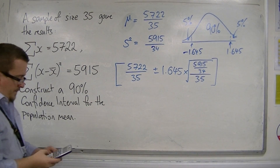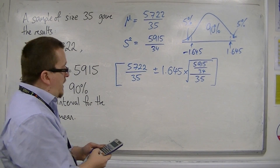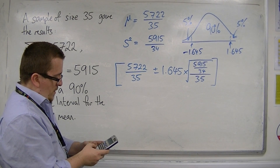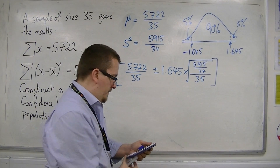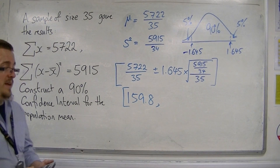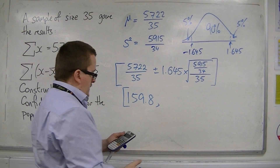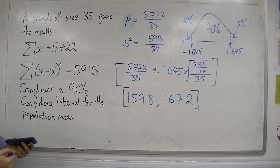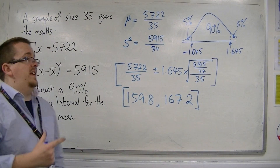Plugging that into the calculator: 5,722 over 35, minus 1.645 times the square root of 5,915 over 34, divided by 35 gives 159.8 as the lower confidence limit. And replacing it with a plus gives 167.2 as the upper confidence limit. So I can be 90% confident that the population mean will lie between these two values.